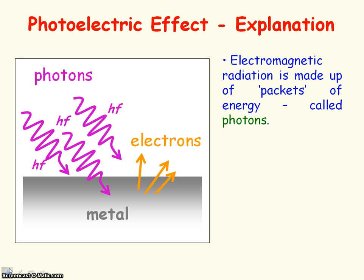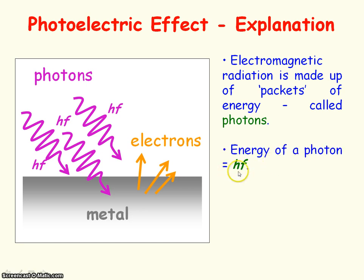Photons can be defined as packets of electromagnetic energy. The energy of each photon is equal to hf, where h is Planck's constant and f is the frequency of the electromagnetic radiation. So here we have three photons, each of energy hf.